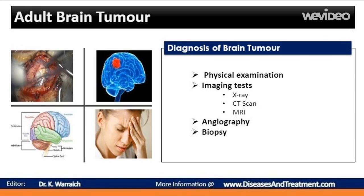Angiography uses a dye that's injected into your artery, usually in the groin area. The dye travels to the arteries in your brain, allowing your doctor to see what the blood supply of the tumors looks like — information that is useful at the time of surgery. Skull X-rays can show breaks or fractures in the bones of the skull caused by brain tumors. These X-rays can also pick up calcium deposits, which are sometimes contained within a tumor or may be in your bloodstream if your cancer has moved to your bones.